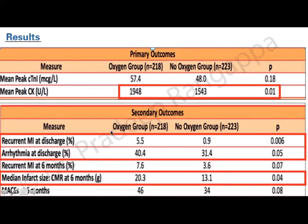Secondary outcomes were even more profound. Recurrent MI at discharge was more in the oxygen group — 5.5 versus 0.9, statistically significant. Arrhythmias at discharge were more in the oxygen group. Recurrent MI at six months was more in the oxygen group. Median infarct size by cardiac MRI at six months was much bigger in the oxygen group. Major adverse cardiac events at six months were also more in the oxygen group.